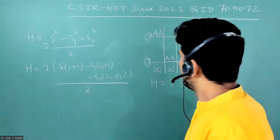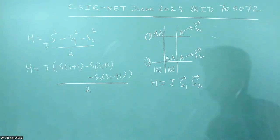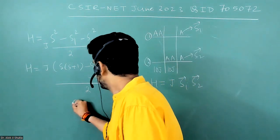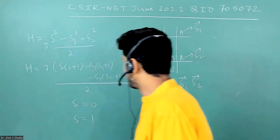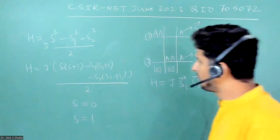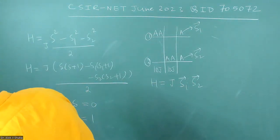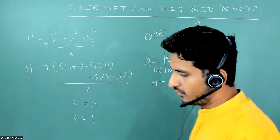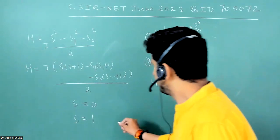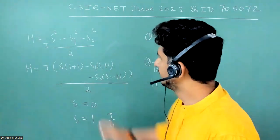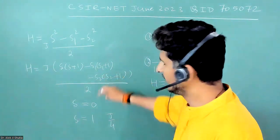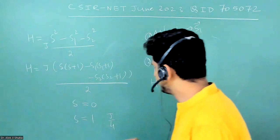So what will happen is the interaction of S1 and S2 may result into S is equal to zero and S is equal to one. So if you put S is equal to zero, suppose you put S is equal to zero, what you will get? If you put S is equal to one, you get energy as J by four. Put it here, the value of S is equal to one and S1 and S2 is equal to half, you will get energy as J by four.